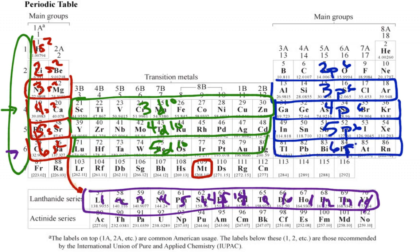6P6, 7S2, 5F14. And then we'd count 1, 2, 3, 4, 5, 6, 7. So it would be 6D7.